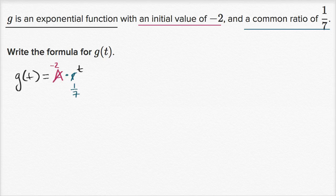So let me just write it again a little bit neater. g of t is going to be equal to our initial value, negative two, times our common ratio, one-seventh to the t power.